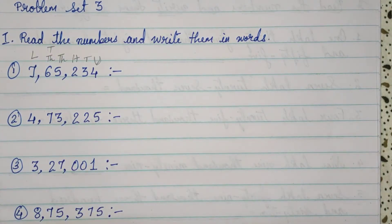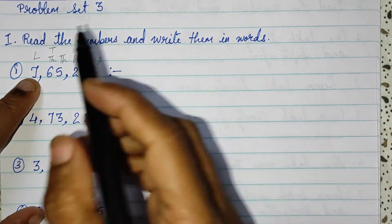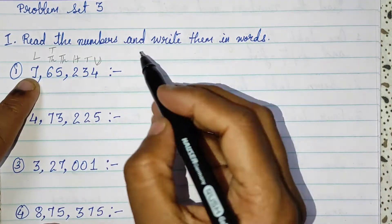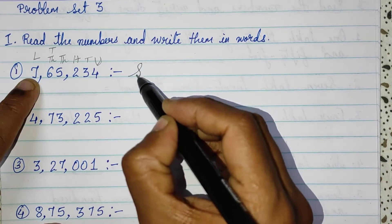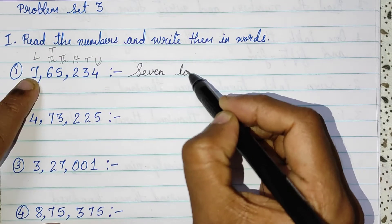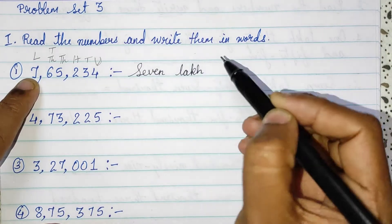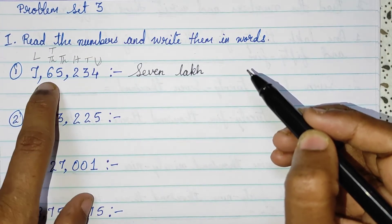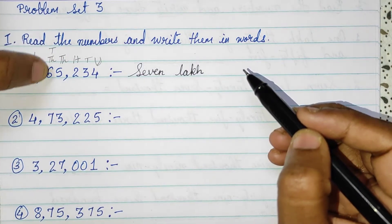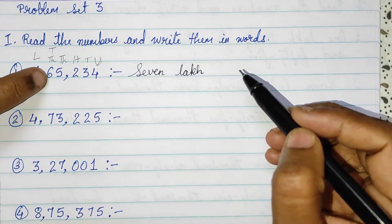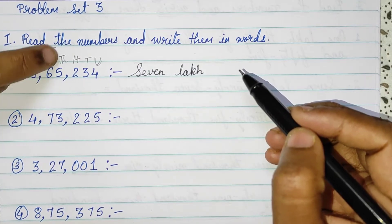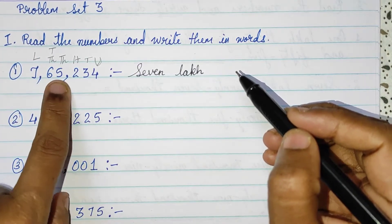Then how to start? Now see, this 7 is standing in lakh's place. So 7 lakh, and then what you have? 6 and 10,000. So 6 into 10 is 60, that means 60,000. But you have 5, so 65,000.